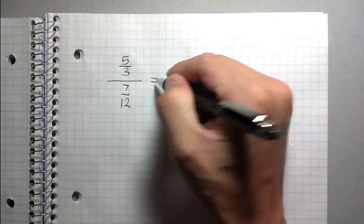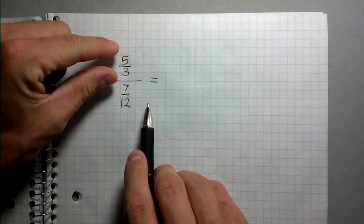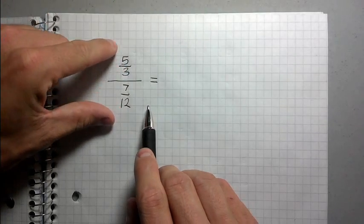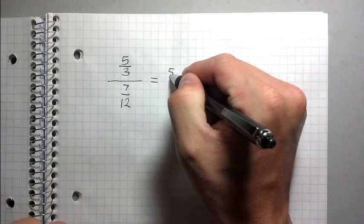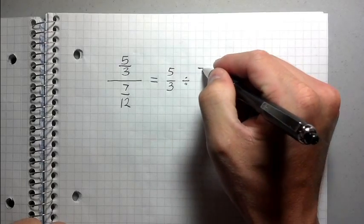So the essential thing to recognize is that the only thing that's going on here is you're really just going five thirds divided by seven twelfths. So you could rewrite this problem as five thirds divided by seven twelfths.